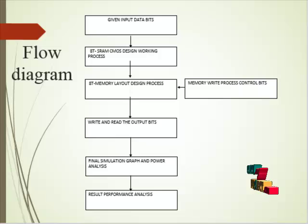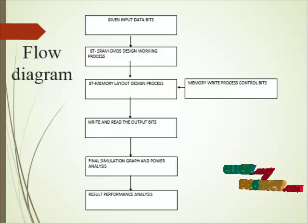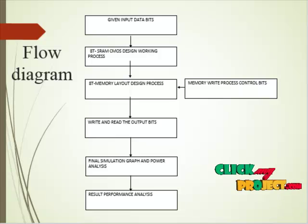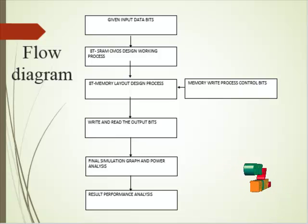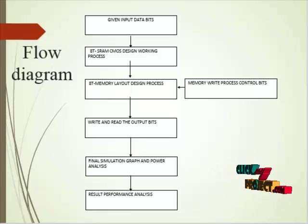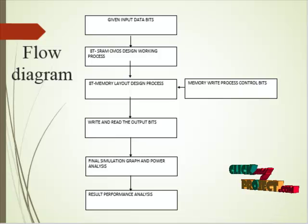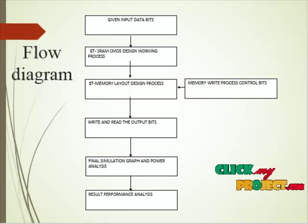In the memory set design process, row and column address selection is performed. The layout memory structure is based on SRAM memory design with read control logic functions, which reduce the overall power consumption level. In the SRAM CMOS design level, the 8T SRAM data is first written and then stored in SRAM memory. The stored data is accessed depending on the read-write line; the stored data is read via the read bit line (RBL) and read word line (RWL). The 8T memory cell array design stores input data, after which we proceed to read and write operations.